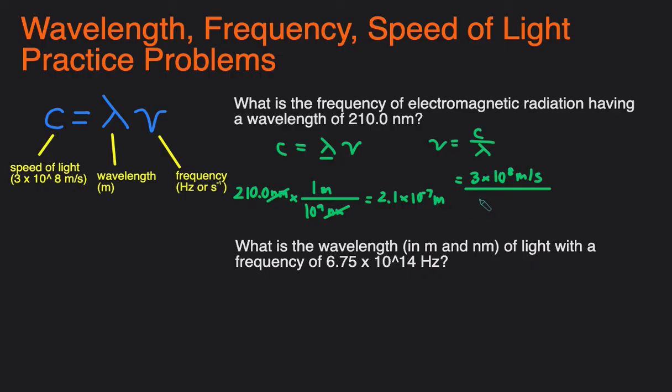So then we plug this in here: 2.1 times 10 to the negative 7 meters, and then plug that into the calculator. So 3 to the power 8 divided by 2.1 to the power of negative 7, and it'll give you 1.429 times 10 to the 15th.